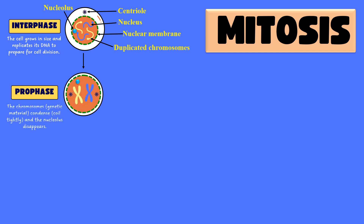The first phase of mitosis starts with prophase. Here the cell starts to lose the nuclear membrane and nucleolus, and the genetic material — the chromosomes — condenses and takes the shape of proper chromosomes, as you can see in the diagram. Now we have properly condensed chromosomes, and the nuclear membrane and nucleolus start dissipating and disappear at late prophase.